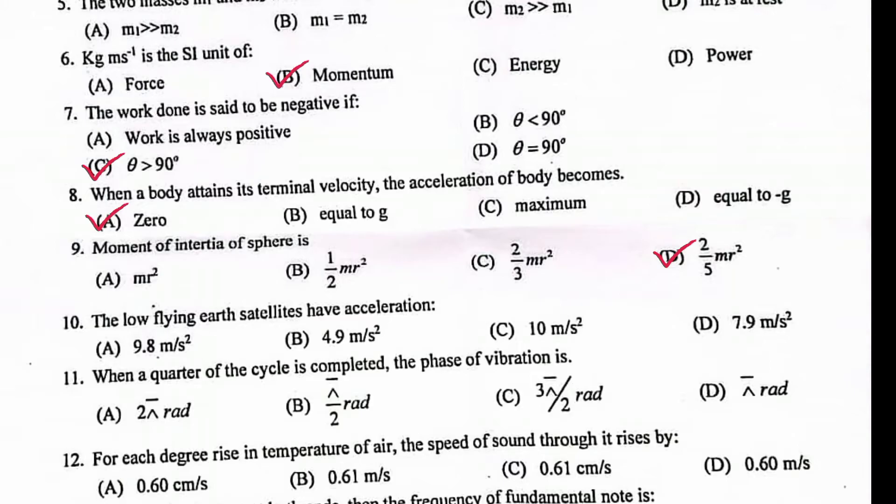The low flying earth satellites have acceleration 9.8 meter per second square. When a quarter of a cycle is completed, the phase of vibration is pi over 2 radian.